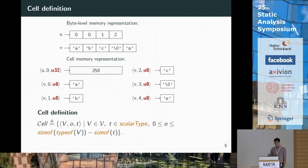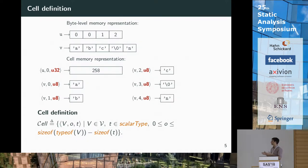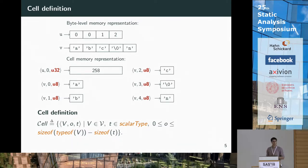Since this is low-level C, a good memory representation would be a byte-level memory representation. However, we want to infer more interesting numerical relations than those describable at the byte level. Therefore, we rely on the cell abstraction, whose goal is to regroup adjacent bytes into what is called a cell — basically a portion of memory denoted by its base variable, its offset, and the type of value it contains. Here is a quick example of a cell memory representation for a byte-level memory representation.